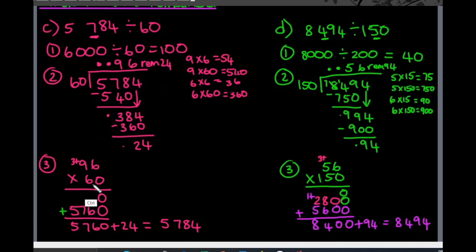To verify, I worked out what is 96 multiplied by 60 and got 5,760. Then I added the 24, which gave me 5,784 — confirming the answer is correct.